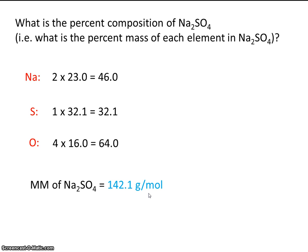So let's just say that we have a one mole sample of sodium sulfate. So this is how many grams of sodium sulfate we have. Now remember, percent composition is asking us how much of that sample is sodium, how much of the sample is sulfur, and how much of the sample is oxygen.